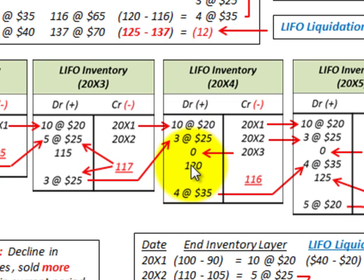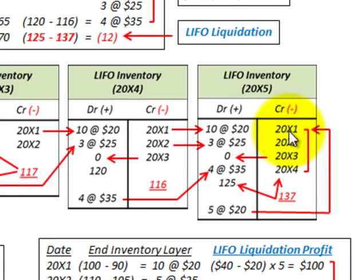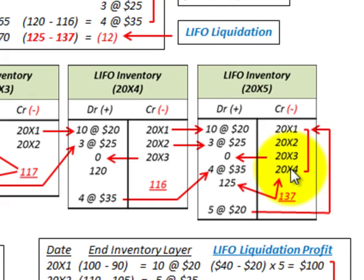In 20X4, we purchased 120 and sold 116, leaving 4 units remaining at $35 each. That gets moved up into LIFO inventory for 20X5. So now we have those 10 units from 20X1 at $20 each, 3 units from 20X2 at $25, no layer for 20X3, and 4 units from 20X4 at $35 — and this is where our liquidation comes in.